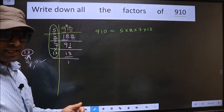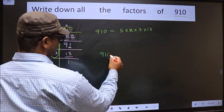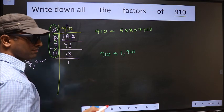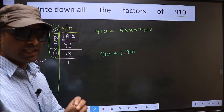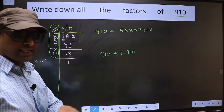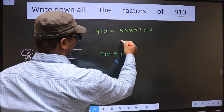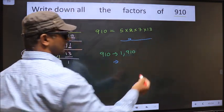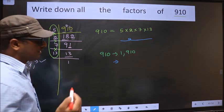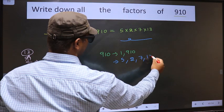Now let us write down all the factors of 910. Any number you take will definitely include 1 and the number itself in its factors. Next, from these prime factors you select 1 different number at a time. Like that, we get 5, 2, 7, and 13.